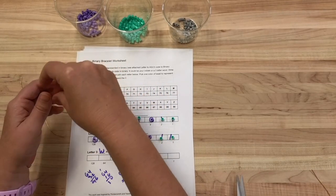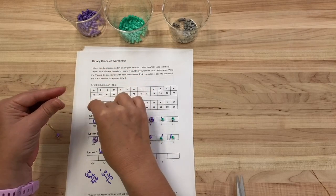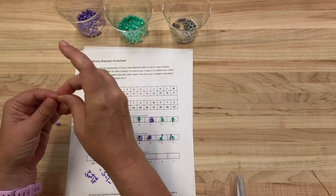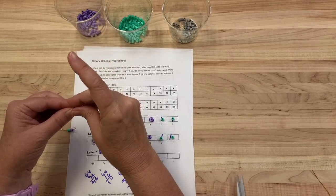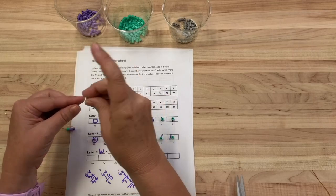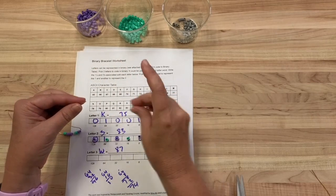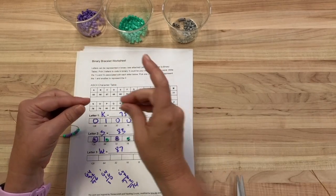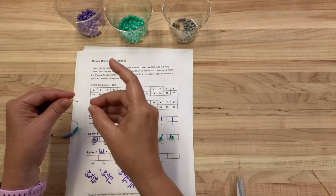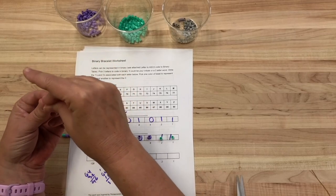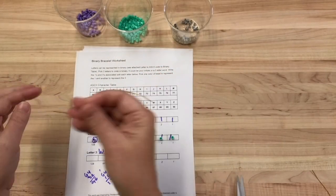And then I can just start stringing. Now again, this can be a little challenging with little fingers, which is why I also have the bookmark activity. Oopsie. And then finally, if I want a third color to separate that first letter, I can do that.